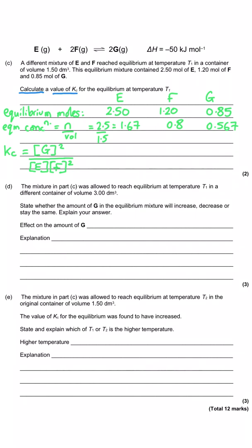I prefer to divide the equilibrium moles by volume to give me the equilibrium concentrations before I put the values into the Kc expression, but there's no real reason why you couldn't do them both at once.